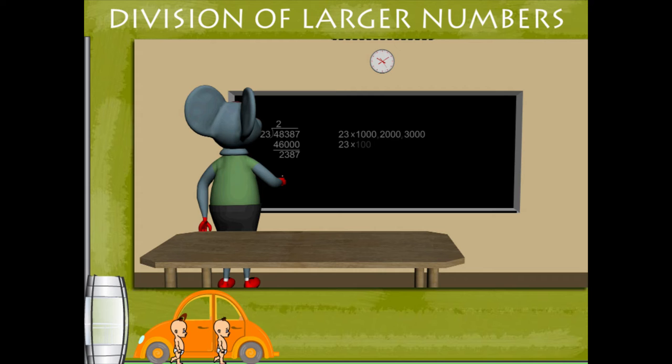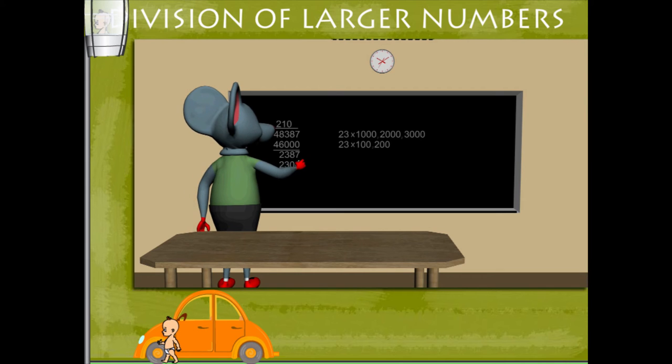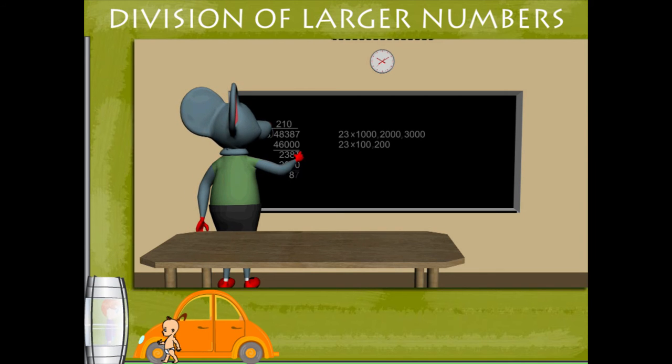He now multiplies 23 by 100 and 200. He writes 10 on the quotient line and subtracts 2,300 from 2,387 to get 87.